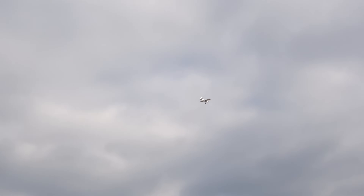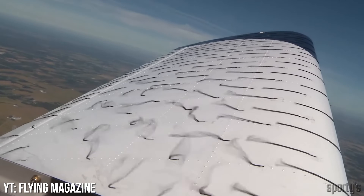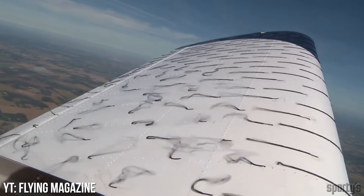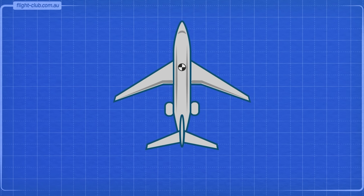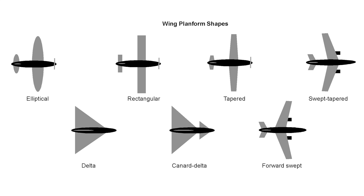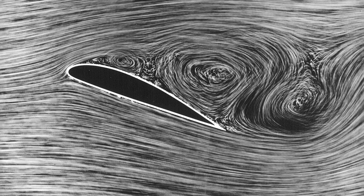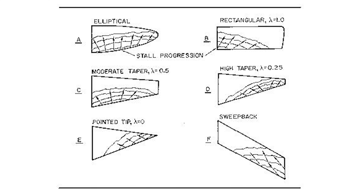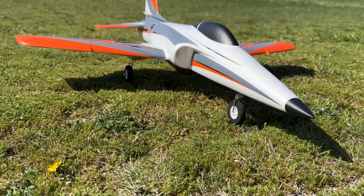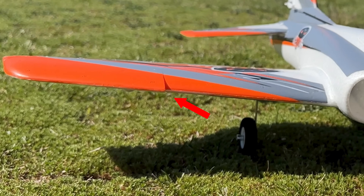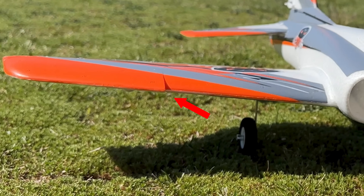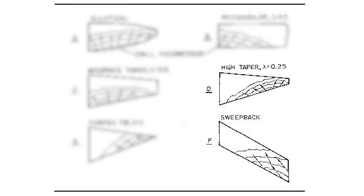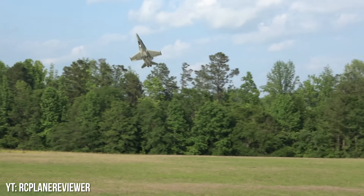Now that we've discussed the basics of stalls — stalls 101 — let's move into the intricacies behind what's happening on various types of wings, as well as the different types of stalls, including the infamous RC tip stall jargon. Stalls 201. Depending on the type of wing your plane has, stall propagation doesn't happen across all parts of the wing at the same time. Manufacturers can help prevent nasty bites using techniques such as washout or features like a dogtooth. In general, tapered and swept wings both make tip stalls more likely, especially in slow flight.